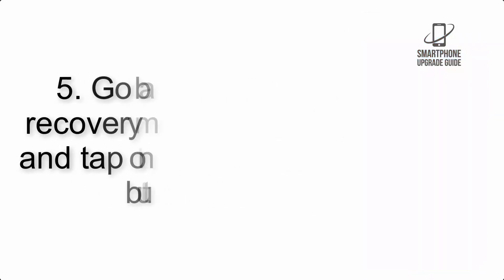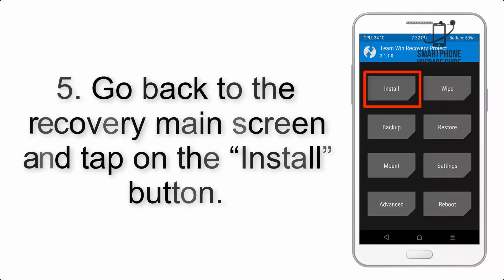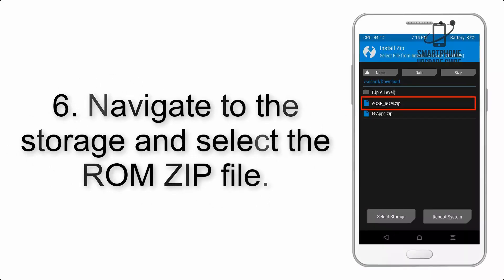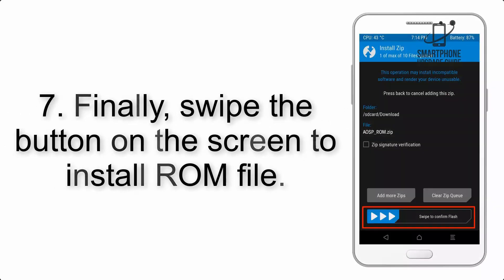Step 4: Swipe the button to wipe the device. Step 5: Go back to the recovery main screen and tap on the Install button. Step 6: Navigate to the storage and select the ROM zip file.